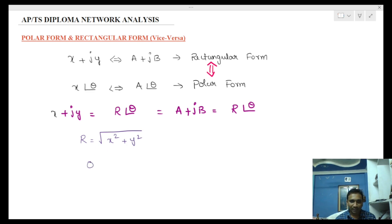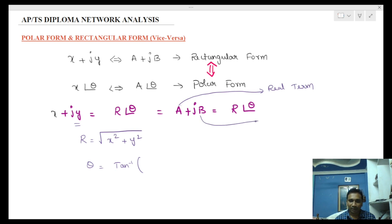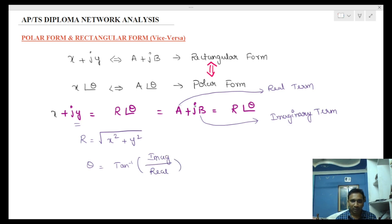And theta is given by the formula: theta equals tan inverse of the imaginary part divided by the real part. The real term is called the real term, and the other part with j is called the imaginary term. So theta equals tan inverse of imaginary by real.